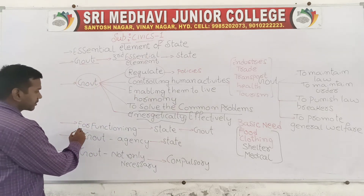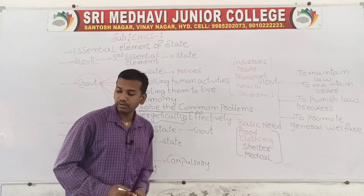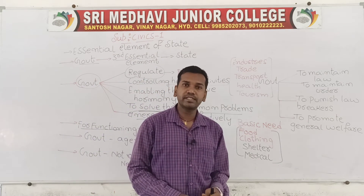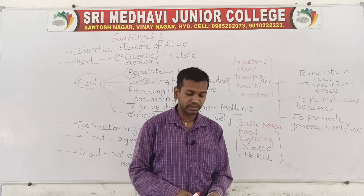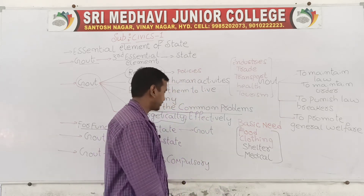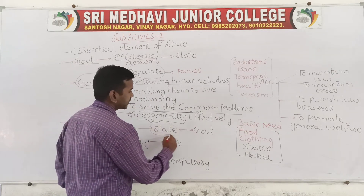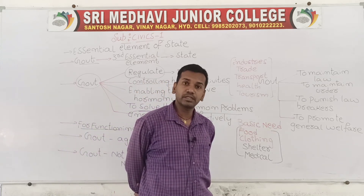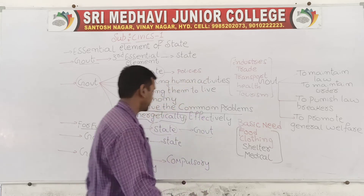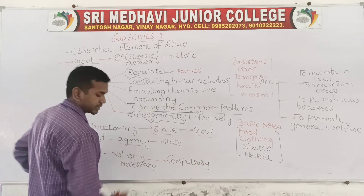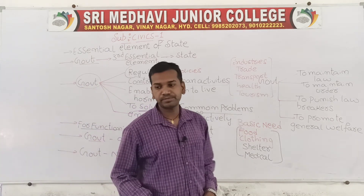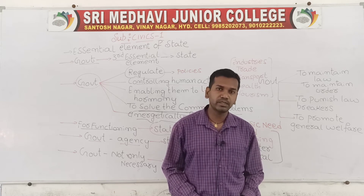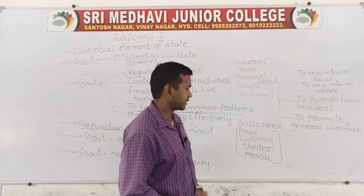For the functioning of the state, the role of government is very important. Without government the state cannot function. Population, territory, and government are all considered important elements of the state. Government is also called an agency of the state - all the administrative work of the state will be under the control of government.